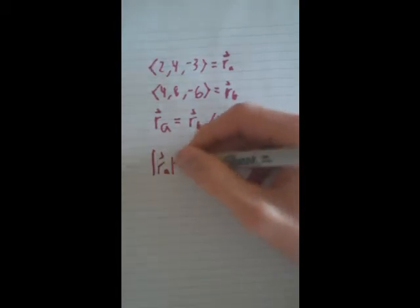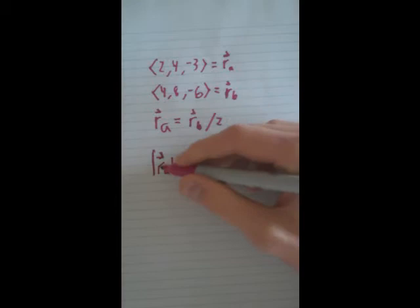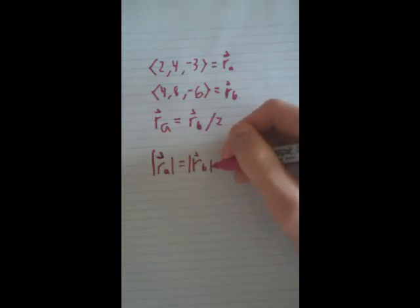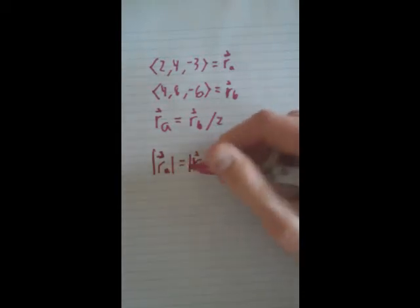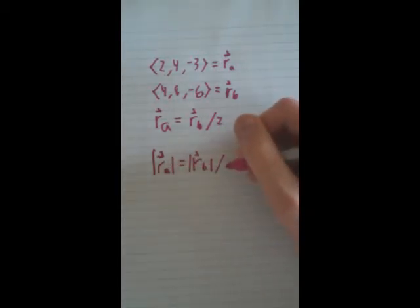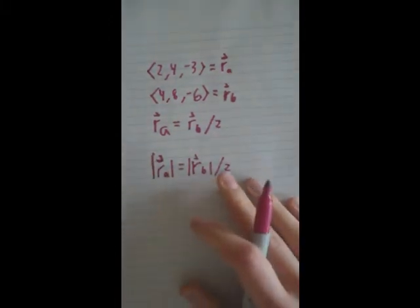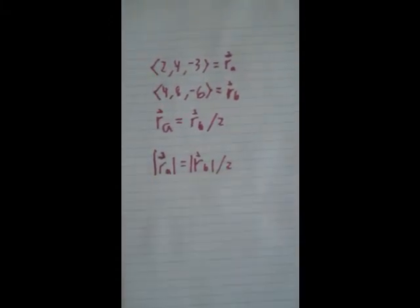if you take the magnitude of R_A and the magnitude of R_B, it'll work the same way. The magnitude of R_A will equal the magnitude of R_B over 2. That's another important thing to think about.